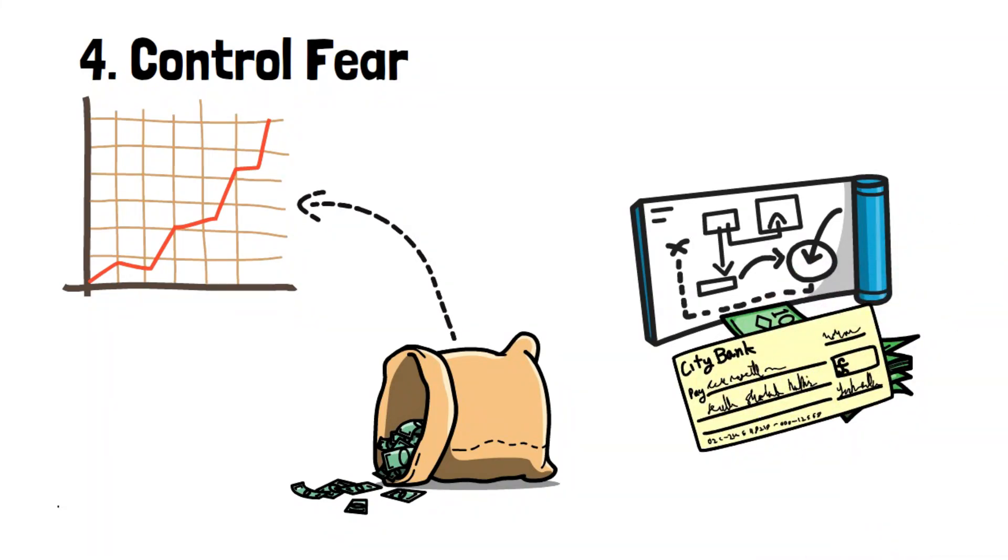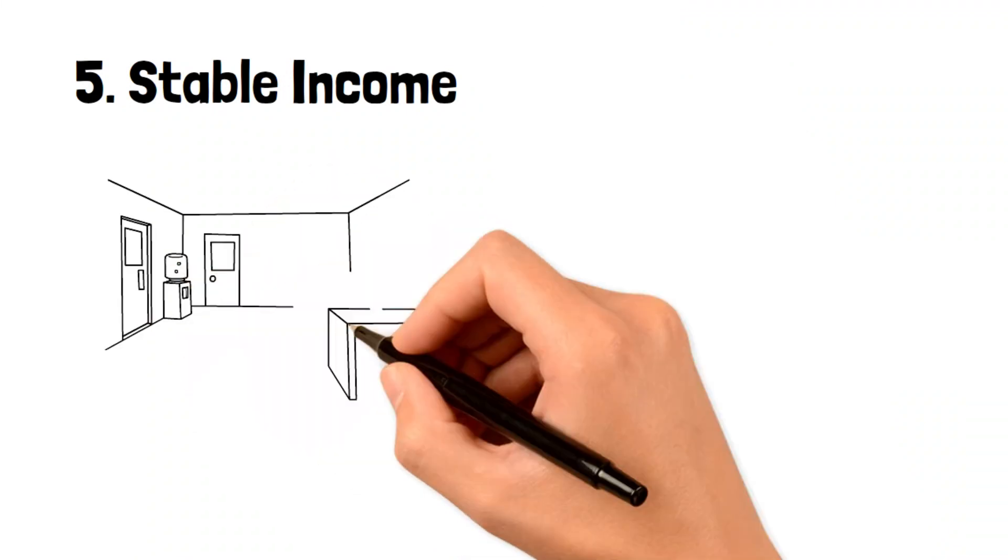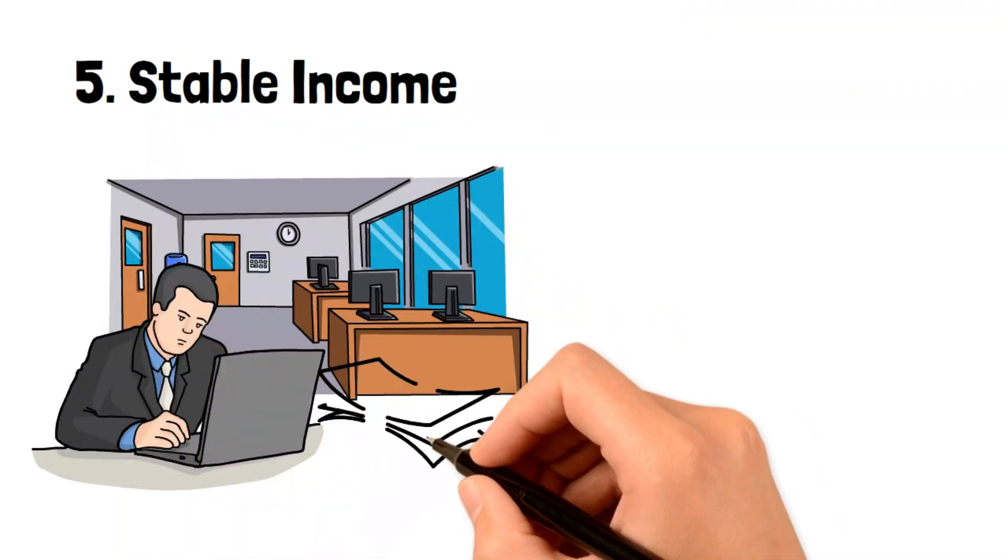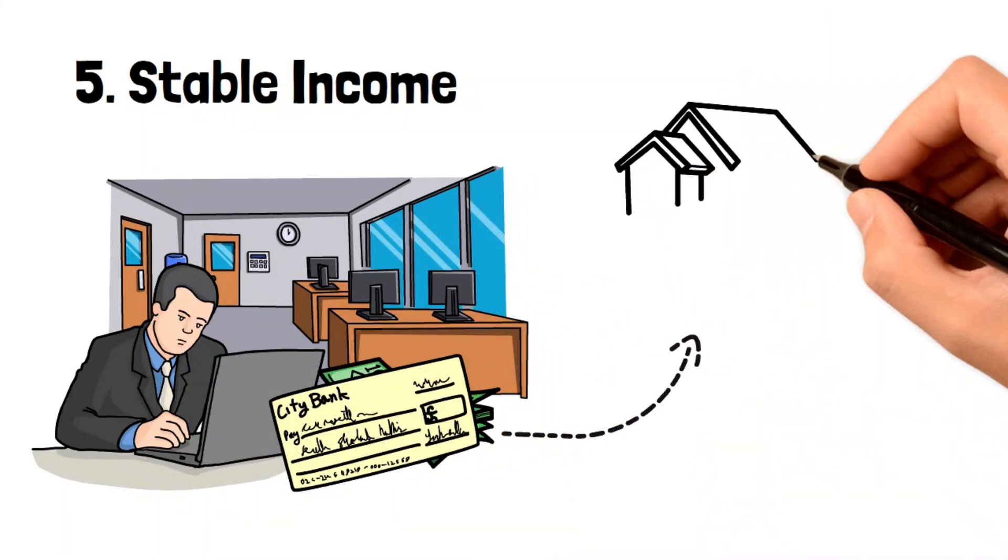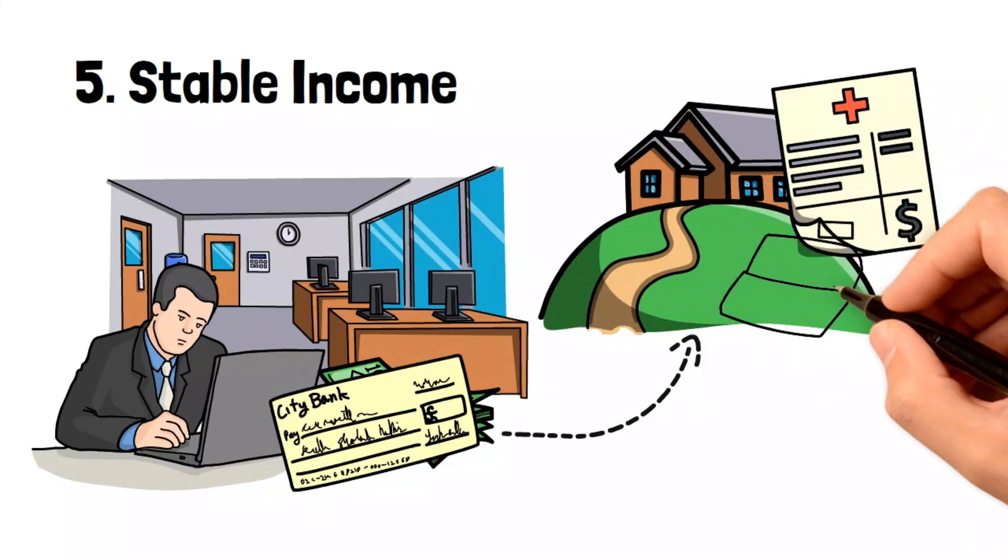The fifth rule is like the conductor of your financial orchestra. It reminds you to have a stable source of income. With a steady income, you can take advantage of opportunities when the market is down without having to sell things hastily to cover your bills.